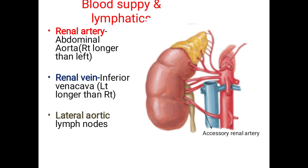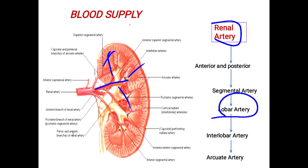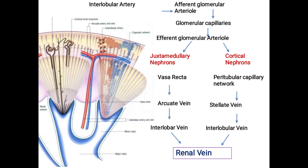The renal artery divides into anterior and posterior branches at the hilum. These divide into lobar, then interlobar, then arcuate arteries, then interlobular arteries, which give rise to afferent and efferent glomerular arterioles and glomerular capillaries. All venous drainage ultimately drains into the renal vein.